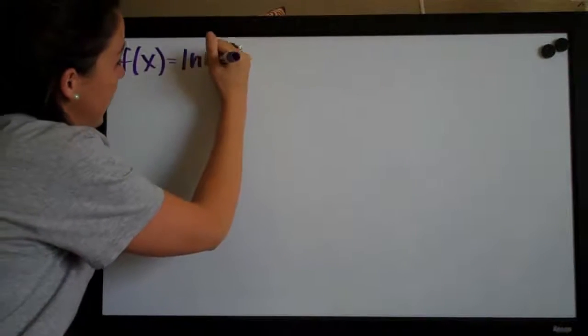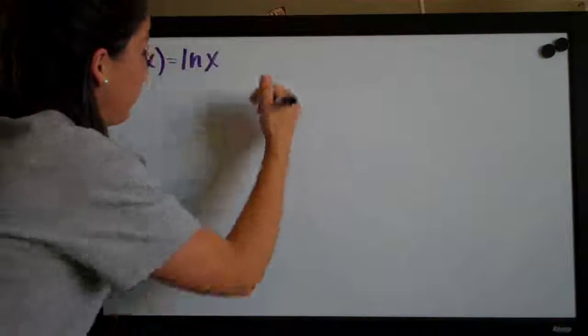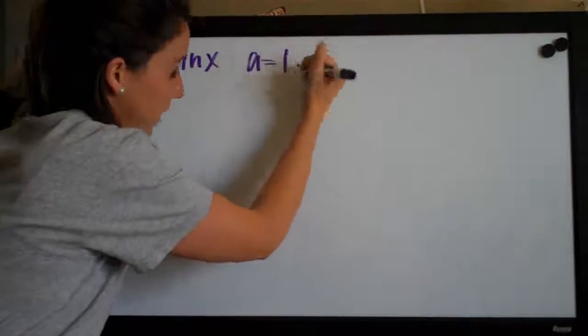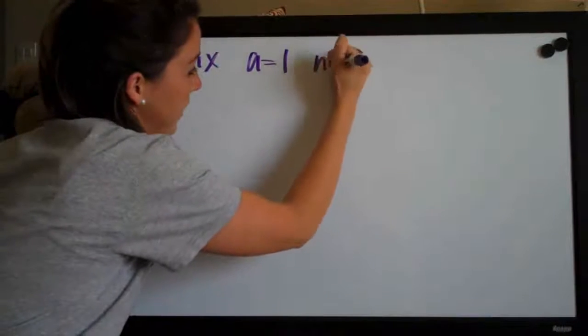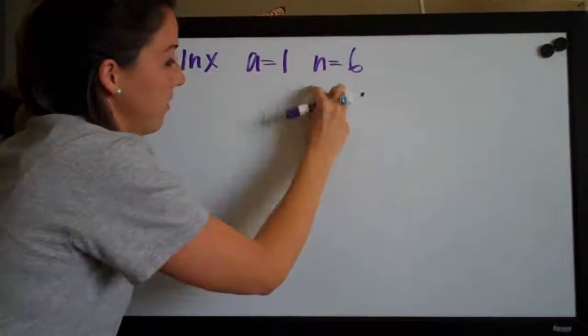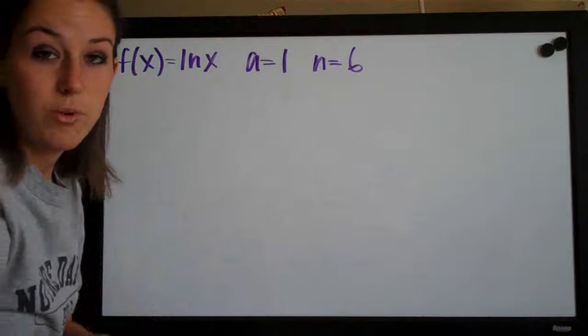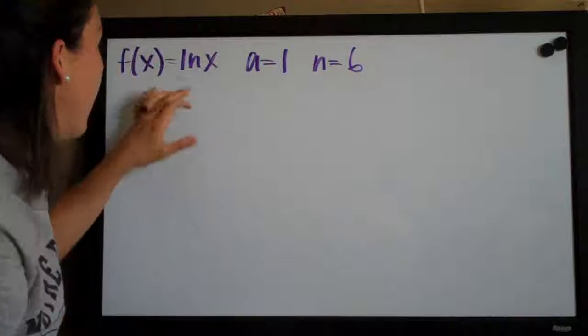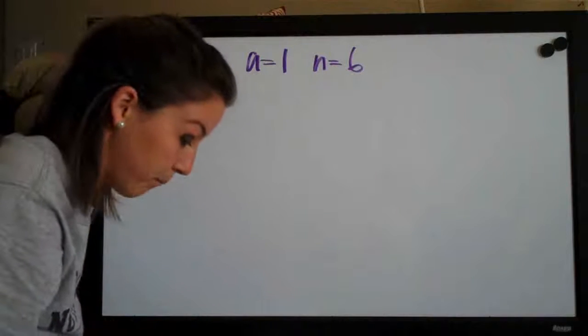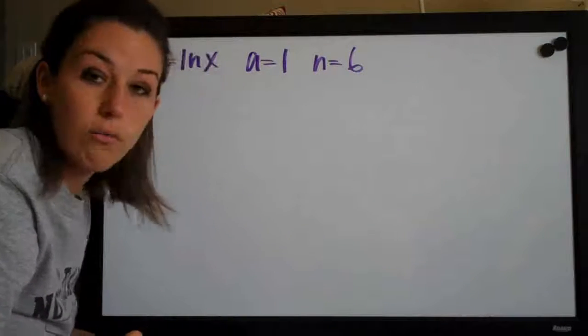This one asks us to find the nth degree Taylor polynomial of f(x) equals ln or the natural log of x about a which they give us as a equals 1 and when n equals 6. So they asked us to find the sixth degree Taylor polynomial of the function natural log of x. And then it says simplify the coefficients as much as possible.